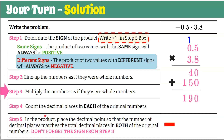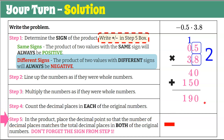Count our decimal places in each of the original numbers: one decimal place plus one is two decimal places total. Step five: slide over two decimal places and place our decimal point, then write our product — negative 1 and 9 tenths. You could put a zero here, but it does not change the value.